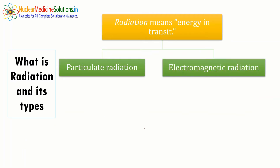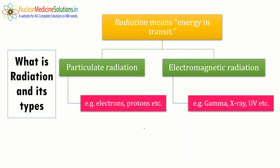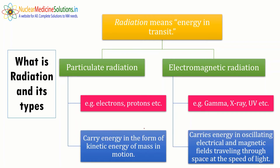Radiation is a form of energy in transit — there may be emissions or transmissions of energy through space or any medium. There are two types of radiation: particulate radiation and electromagnetic radiation. Examples of particulate radiation include electrons, protons, neutrons, and positrons. Examples of electromagnetic radiation include gamma rays, X-rays, UV, and IR. Particulate radiation carries energy in the form of kinetic energy because these particles have mass.